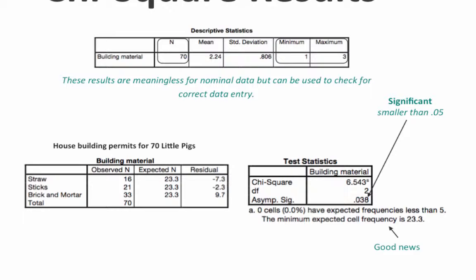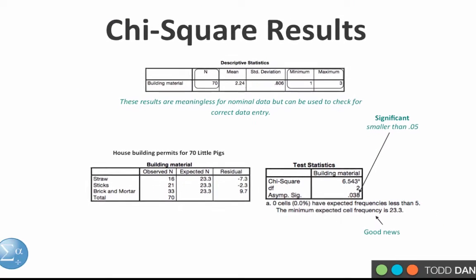Scrolling down, we get to building materials. We see straw, sticks, and brick-and-mortar with the observed n and the expected n. Notice how the expected n of 23.3 is the same for all — this means we're using an assumption of equal preference, where all expected values are the same. The residual is just the O minus E value. Under test statistics, we see the chi-square and the asymptotic significance, which is 0.038. That is less than 0.05, so this test is statistically significant. We also see the note that 0 cells have expected frequencies less than 5 — we want at least 80% of cells with expected values greater than 5, and that is exactly what we find.